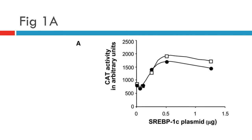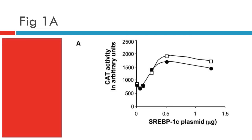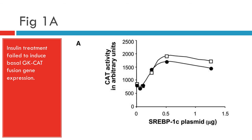Figure 1A shows primary hepatocytes cultured for 16 hours in the presence of 5 millimolar glucose without insulin, then transfected with 7.5 micrograms of SCAT-GK fusion gene, 2.5 micrograms of the reference plasmid RSV-luciferase, and the indicated amount of expression vector for mature SREBP1C. Cells were cultured in medium containing 5 millimolar glucose. The square represents absence and the black circle represents presence of 100 nanomolar insulin. Values are means of four separate experiments performed in duplicate.